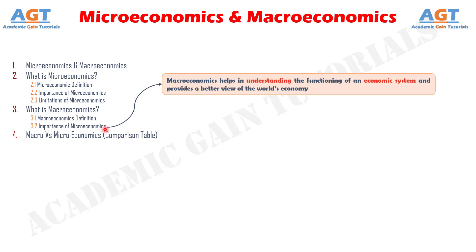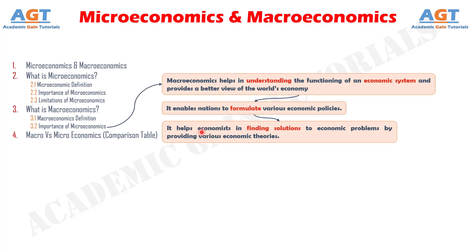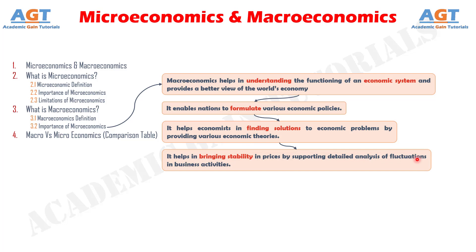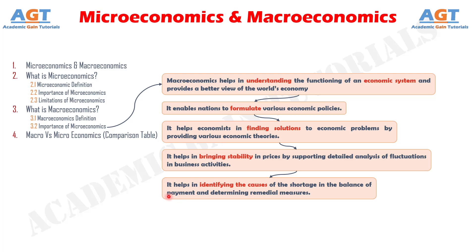The following points explain the importance of macroeconomics. Importance number one: Macroeconomics helps in understanding the functioning of an economic system and provides a better view of the world's economy. Number two: It enables nations to formulate various economic policies. Number three: It helps economists in finding solutions to economic problems by providing various economic theories. Number four: It helps in bringing stability in prices by supporting detailed analysis of fluctuations in business activities. And it helps in identifying the causes of shortage in the balance of payment and determining remedial measures.